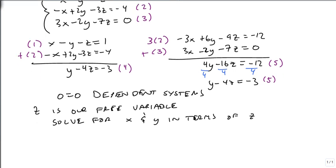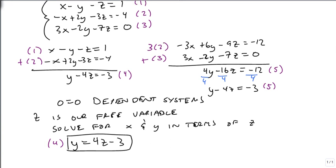So we're going to start with equation 4. From equation 4, we add 4z and we get y equals 4z minus 3. So now my y is in terms of z. If I know what a z is, I need to find this matching y.